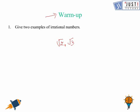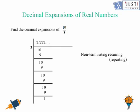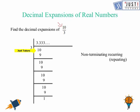Now we are going to find out how to write 10 over 3 as a decimal expansion, where 10 is the numerator and 3 is the denominator. We put 10 as a dividend and 3 as a divisor. How many 3s go into 10? That is 3. So we put 3 on top; 3 times 3 is 9, and 10 take away 9 is 1, so the remainder is 1.